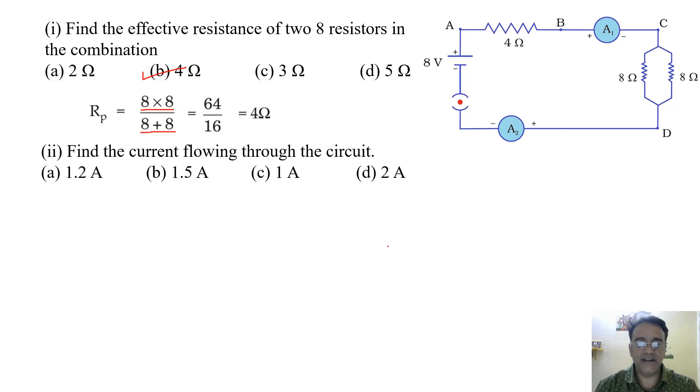Now the second question: find the current flowing through the circuit. For this we should know the total resistance. Now this resistance and this equivalent resistance are connected in series. I got 4 ohm in the first question. So 4 plus 4 is 8. We will use formula V equals IR. V is given 8 and R is 4 plus 4 that is 8. So we will get I equals 1 ampere. This is the correct option.